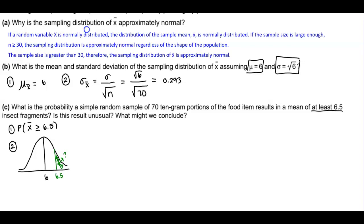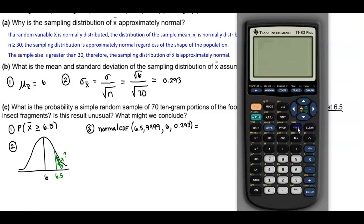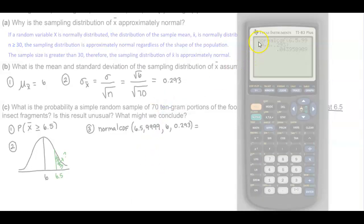Since we're using technology, we can use the normal CDF. We know our lower bound is 6.5, our upper bound is 9999, our mean from part b is 6, and our standard deviation of the sample means is 0.293. Using a calculator, we take second distribution, normal CDF, with lower bound 6.5, upper bound 9999, mean 6, and standard deviation 0.293. And there is our probability.